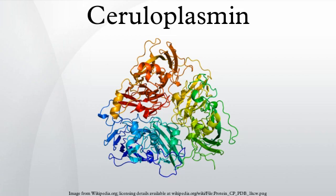Ceruloplasmin exhibits a copper-dependent oxidase activity, which is associated with possible oxidation of Fe2+ into Fe3+, therefore assisting in its transport in the plasma in association with transferrin, which can carry iron only in the ferric state. The molecular weight of human ceruloplasmin is reported to be 151 kDa.